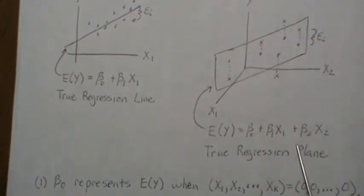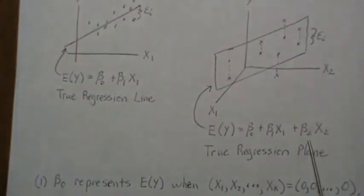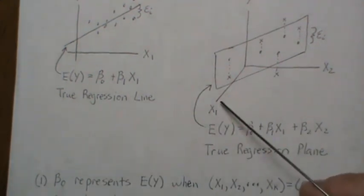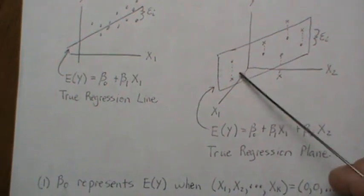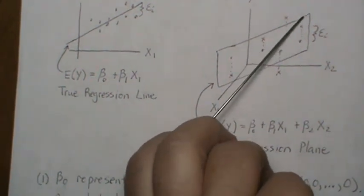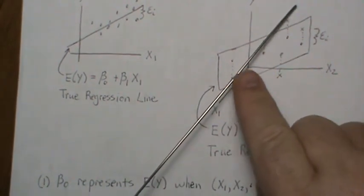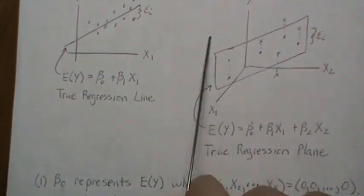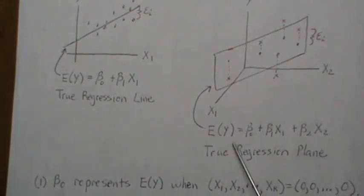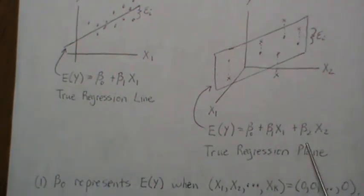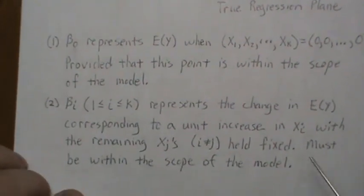And the same way here. So the interpretation of beta 2 is, assuming x1 is fixed and we increase x2 by one unit, then the average y increases by beta 2 amount. But that's assuming that we're actually in the x1 plane fixed and then we increase x2, and then the increase or decrease in the average y is what beta 2 is. And again, this is only valid in the scope of the model.